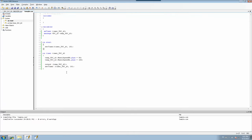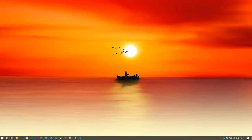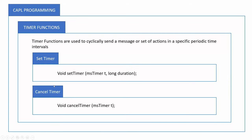Now there is another function called cancel timer. As the name suggests, cancel timer cancels an active timer function. The syntax is void cancelTimer with only one argument — the timer name — specifying which particular timer you want to cancel. With cancel timer you can stop any active timer.